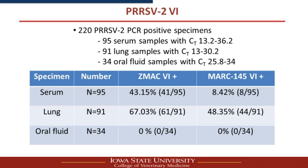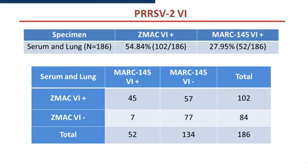Looking at the results: among the 95 serum samples, about 43% were VI positive in ZMAC cells versus 8% in MARC-145 cells. For the 91 lung samples, about 67% success in ZMAC versus 48% positive in MARC-145. For oral fluid samples, unfortunately zero positive in either cell line. Combining serum and lung — 186 samples total — about 55% positive in ZMAC cells and 28% positive in MARC-145 cells.